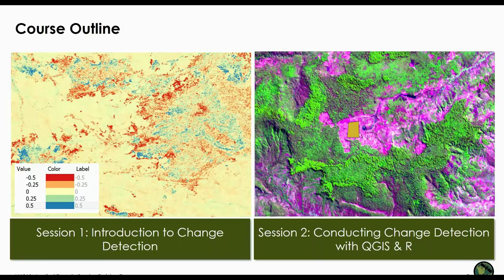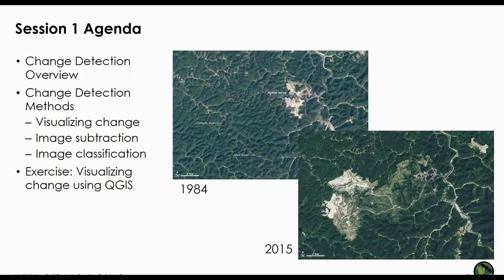This is our course outline for this week and next week. Session one will be an introduction to change detection, and then session two we will show you how to do a change detection using a classification approach. Since it is an advanced webinar series, both sessions will include exercises in QGIS. So you will need to have QGIS loaded for this week's exercise. This week I'm going to give you an overview of change detection, then describe different methods for detecting change with satellite imagery, and then do an exercise on how to visualize change two different ways in QGIS.